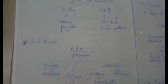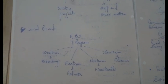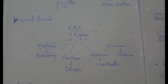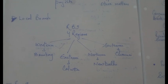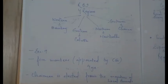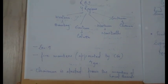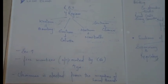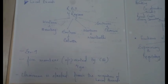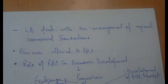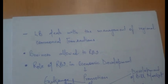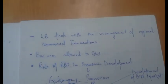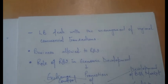Regarding Local Boards, RBI has been divided into four regions: Western, Eastern, Northern, and Southern. The Western local board is in Bombay, Eastern is in Calcutta, Northern is in New Delhi, and Southern is in Chennai. Under Section 9, these local boards are appointed by the central government for a tenure of four years. The chairman is elected from among the members of the local boards. The local board deals with the management of regional commercial transactions.